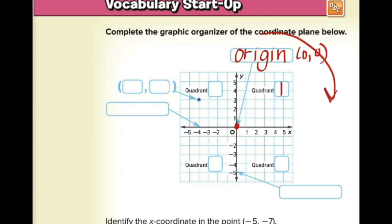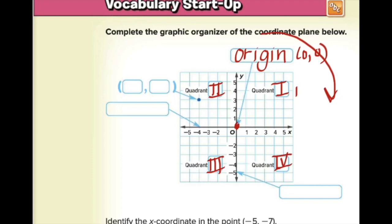Next we run into our quadrants. We'll number all four: Quadrant I is top right, Quadrant II is to the left, Quadrant III is in the bottom left-hand corner, and Quadrant IV is in the bottom right. You could also write these with regular numbers — one, two, three, four. They go counter-clockwise.